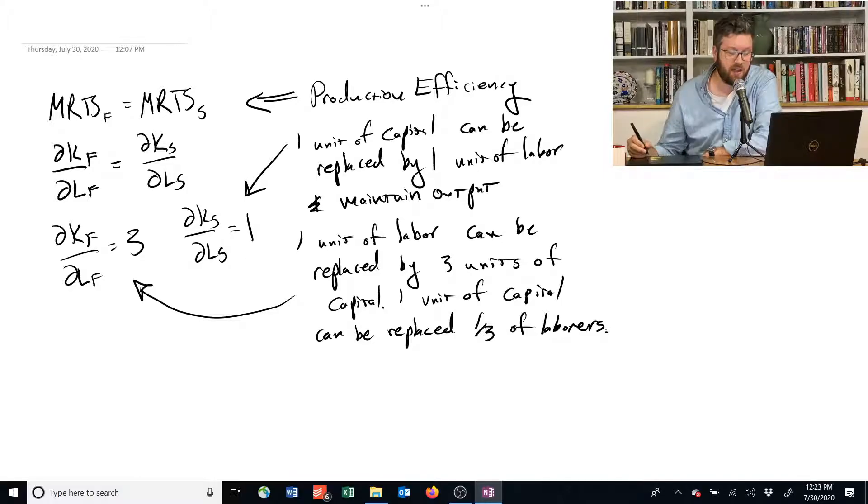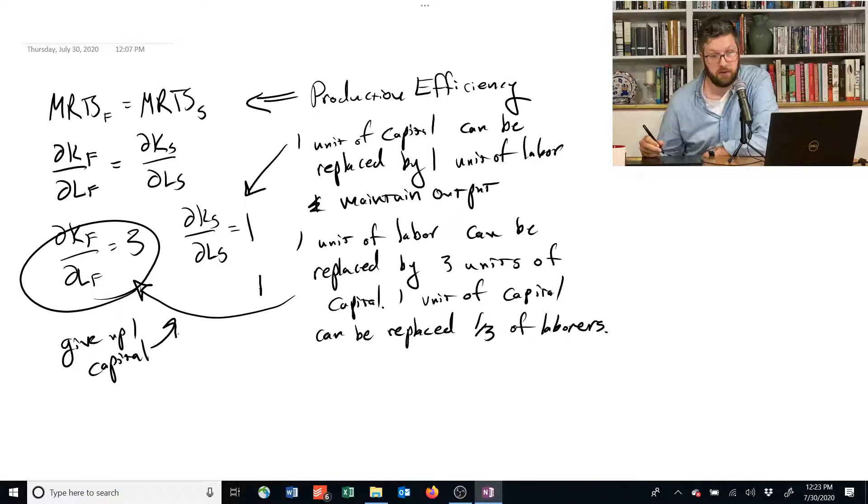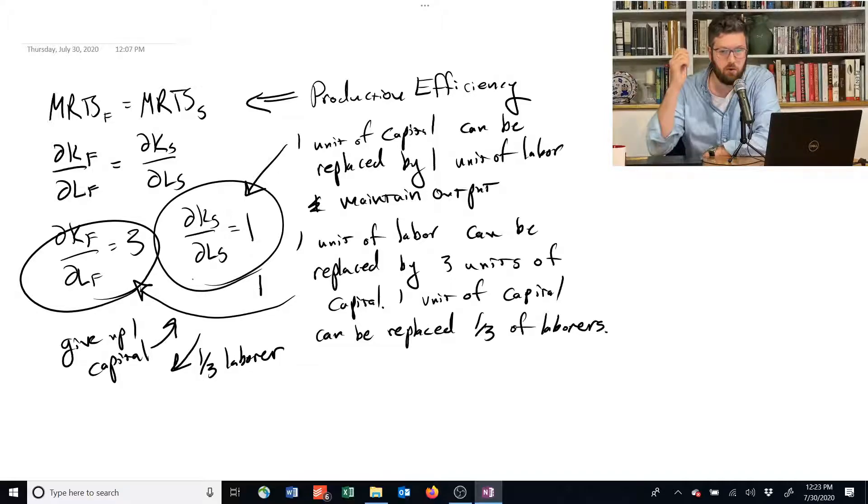If these guys give up 1 unit of capital and give it to those guys, they need to be given back 1/3 a laborer to be just as well off. But these guys over here are getting 1 unit of capital and they're only giving up 1/3 of a laborer. They would have been willing to give up up to a full laborer and still been able to keep their output.